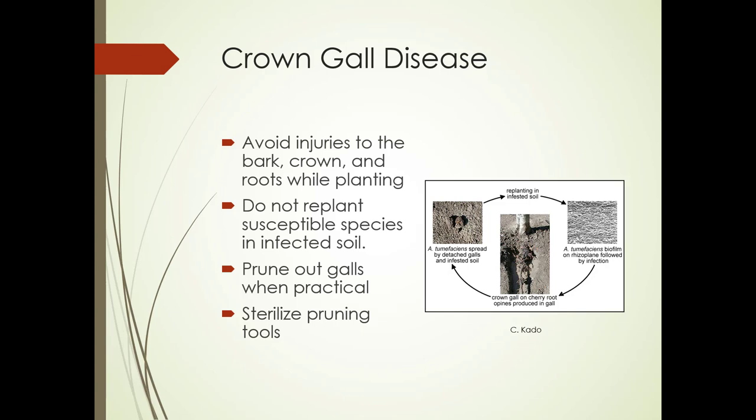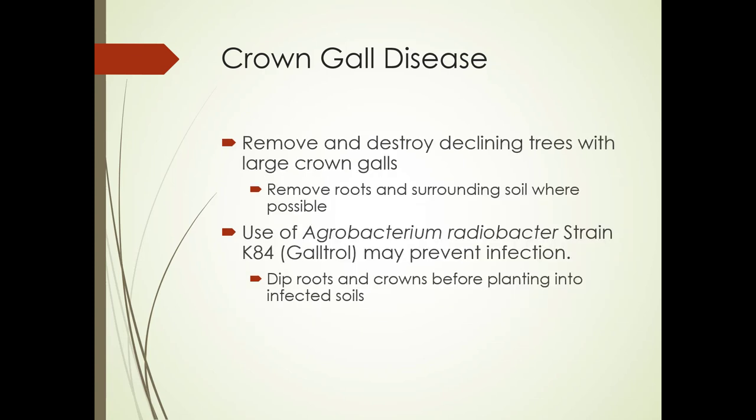It's important to avoid injuries to the bark, crown, and roots while planting. Don't replant susceptible species in infected soil. If you can prune out the gall, make sure cuts are well below the damage, and sterilize pruning tools between cuts. Remove and destroy declining trees with large crown galls, remove the roots and surrounding soil if possible. You could try Agrobacterium radiobacter strain K84 or Galltrol to prevent infection — not cure it — by dipping roots and crowns before planting in infected soils.